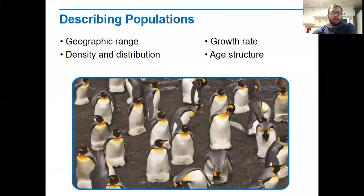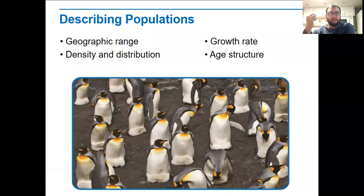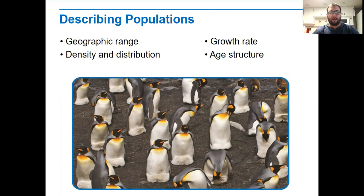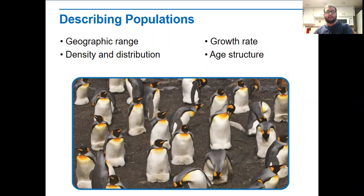The way that ecologists can describe populations, they use geographical range, density and distribution, growth rate, and age structure. The ones we're going to focus on today are those first three — geographical range, density and distribution, and growth rate. When we're talking about age structure, it's really about what percentages of the population do different age groups make up.